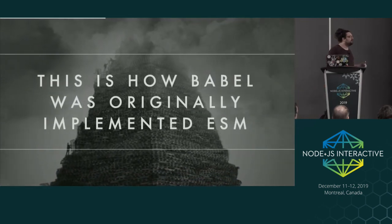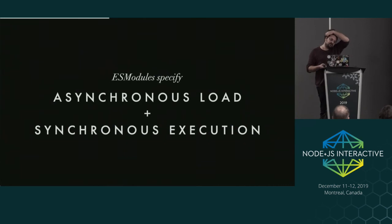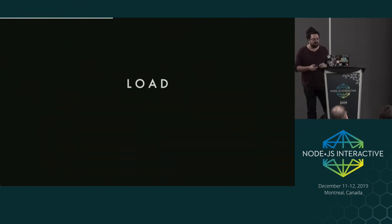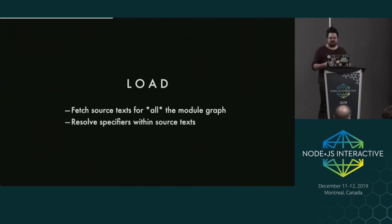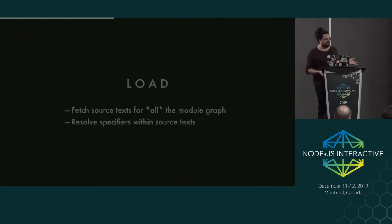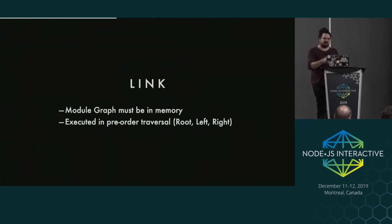This is actually how Babel originally implemented ESM - a lot of how people first experienced ESM was turning all the imports into requires with a regular expression. But it turns out that doesn't work because ES modules specify an asynchronous load and a synchronous execution. The load starts from the root of your graph, fetches it, parses it, finds all other references within it, resolves those specifiers, loads all those references, and recursively grabs every single module in your graph. That goes to a linking phase that needs to have the graph in memory, and then in pre-traversal order - going from the root down - it links your graph, removes cycles, and makes sure the graph is laid out properly.